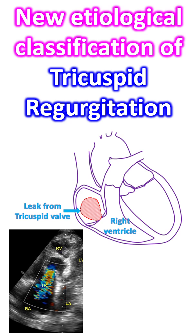CIED-related TR contributes to around 10-15%. In the causative variety, leaflet impingement, perforation, valvular or subvalvular adhesions, or restriction may be seen. In the incidental variety, the CIED lead is present without interfering with the tricuspid valve apparatus, and the pathology will be that of the primary disease process.